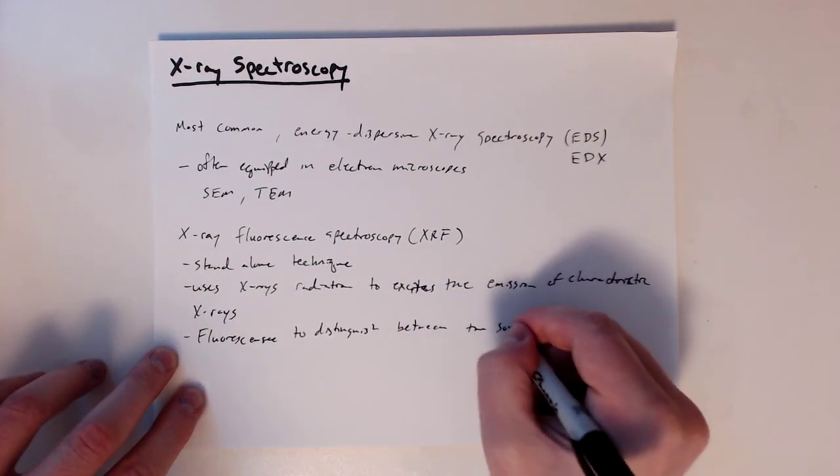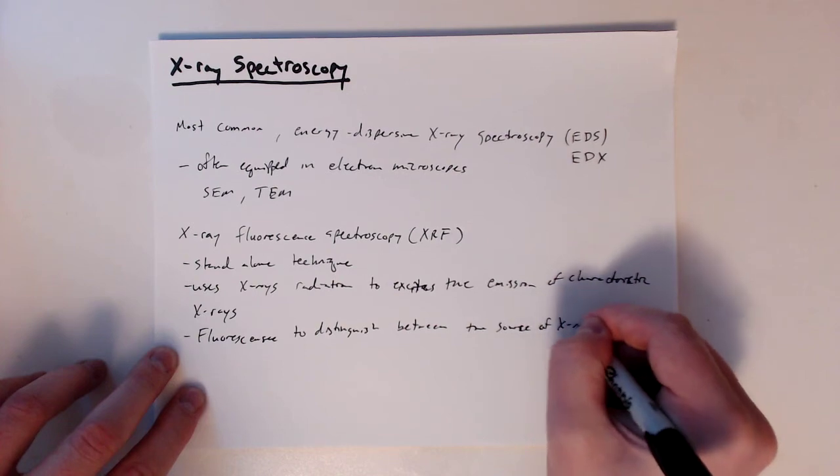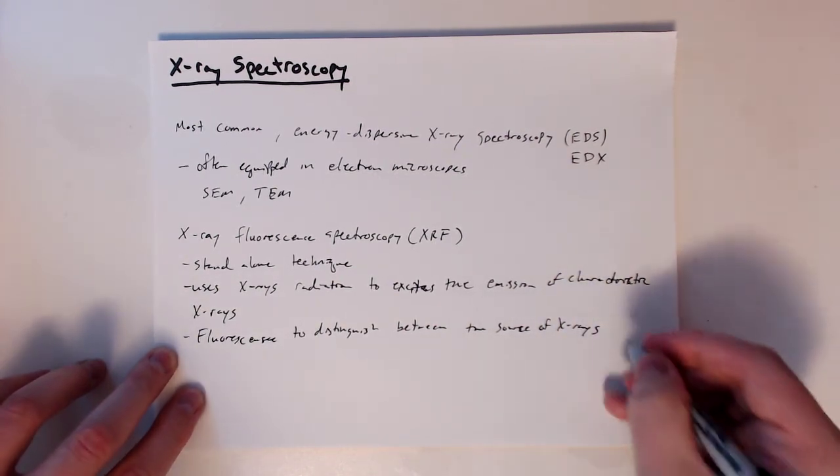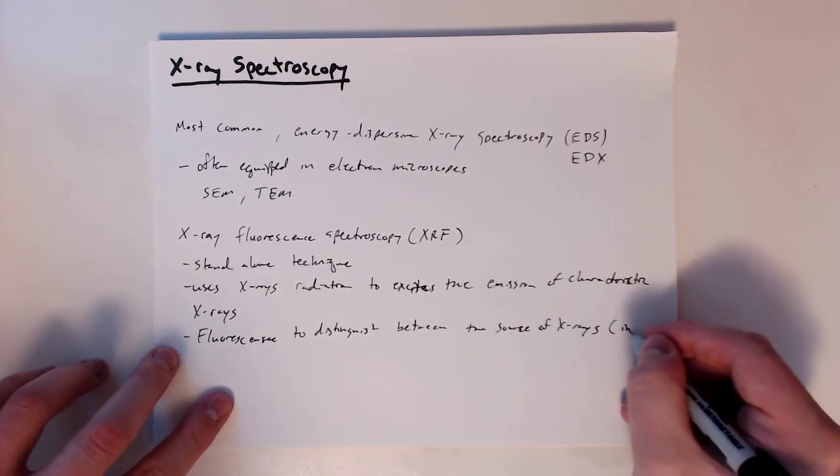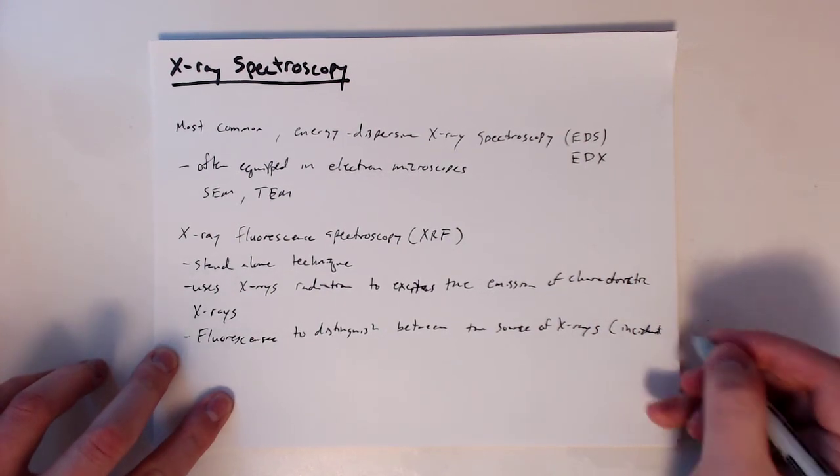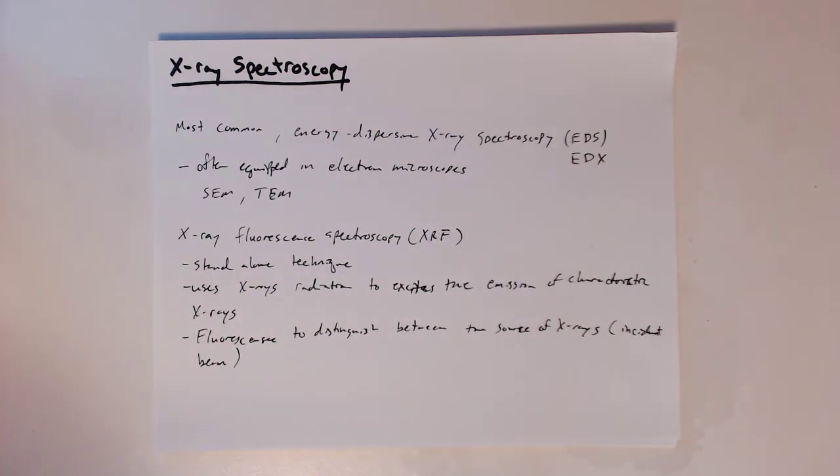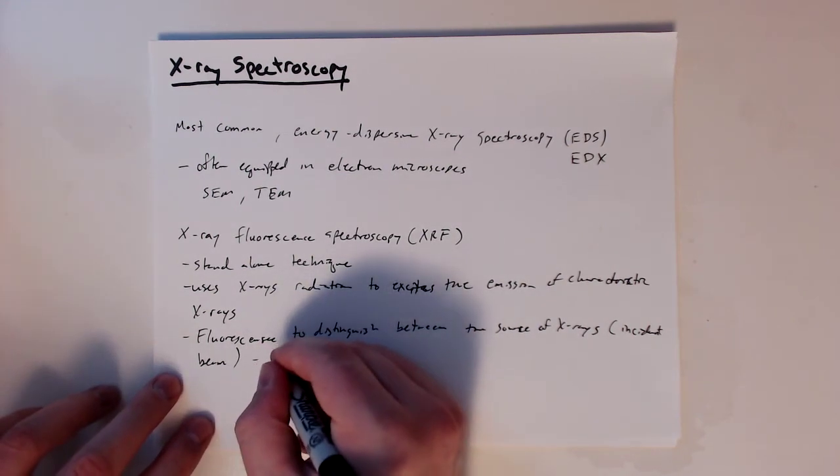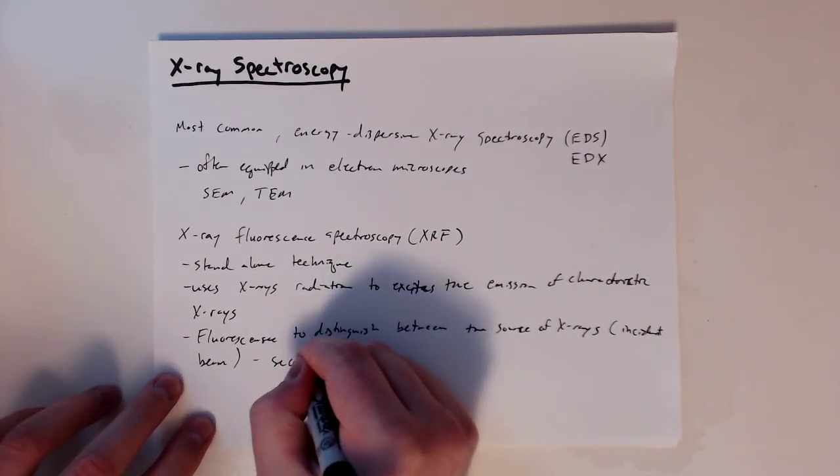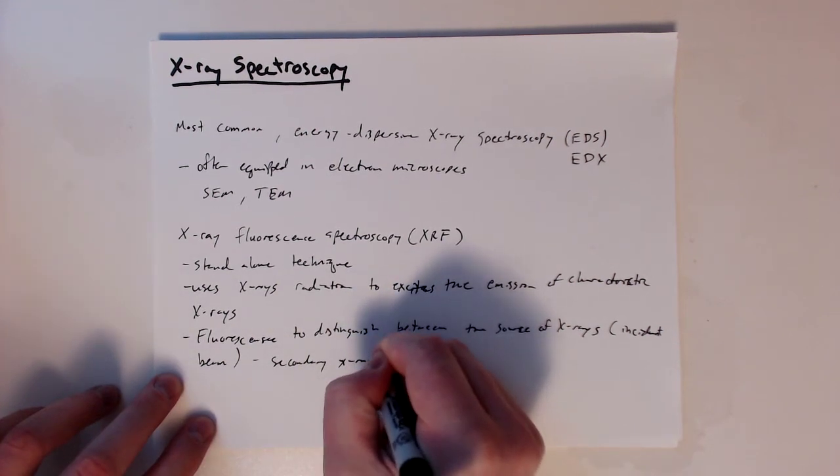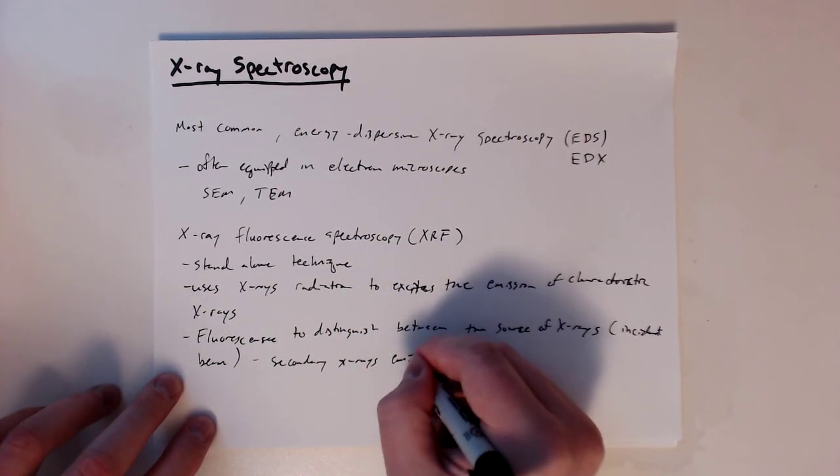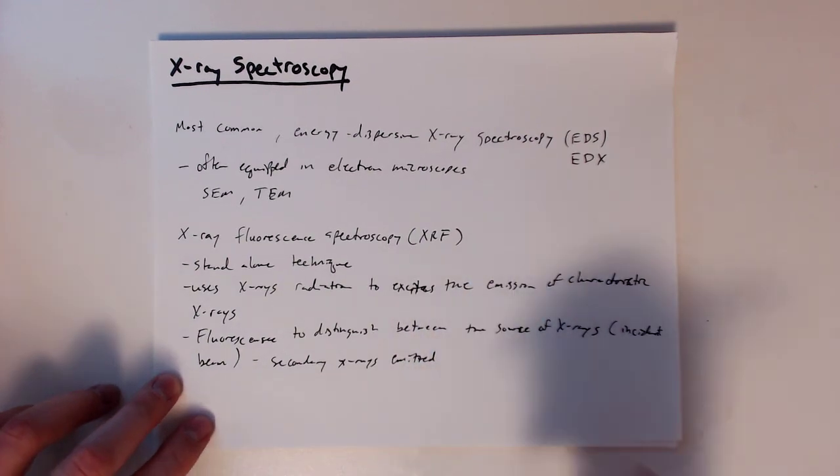between the source of x-rays, what we usually call the incident beam, so this is the beam that's fired at the material that we're trying to identify, and then fluorescence is the secondary x-rays emitted. So we use x-rays to emit these fluorescent x-rays.